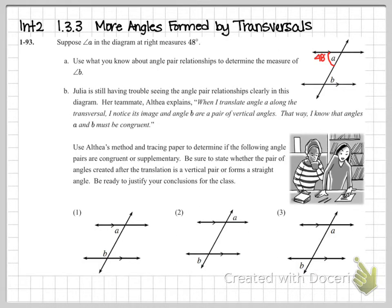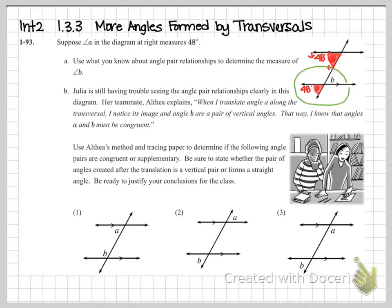I'm going to use corresponding angles first. I'll take angle A and move it down — notice it is below the parallel line and to the left of the transversal. I slide down the transversal to land them together, so this angle down here is also 48 degrees. Then looking at the relationship between angle B and the 48 degrees, we have vertical angles, so B is also 48 degrees.